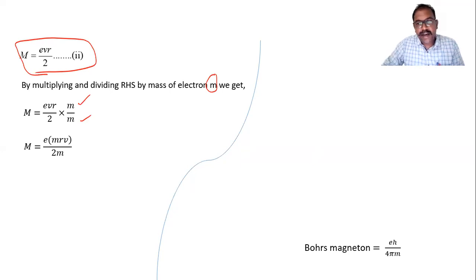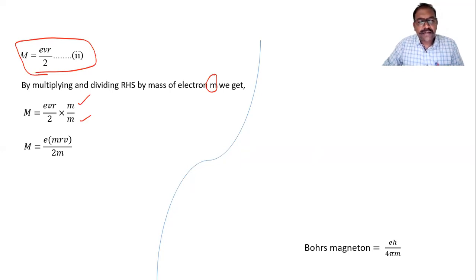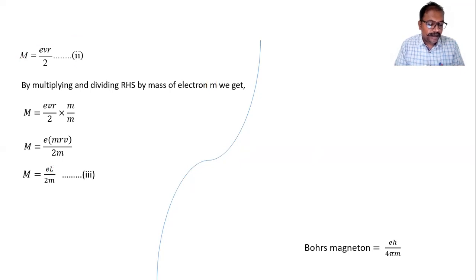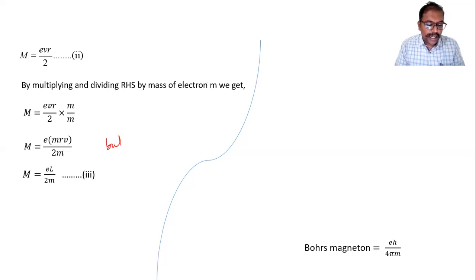Here, m is the mass of the electron, r is the radius of the circular path, and v is the speed of the electron. The product mvr is the formula for angular momentum, which we represent by L. So we get M = eL/(2m).